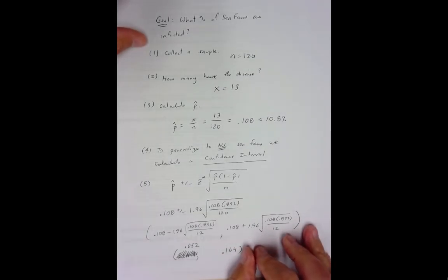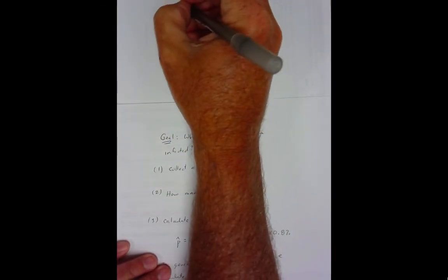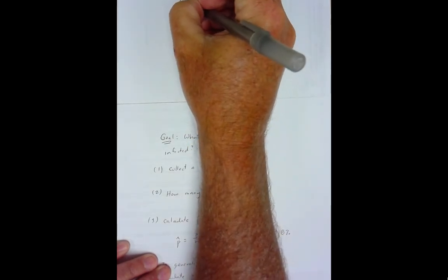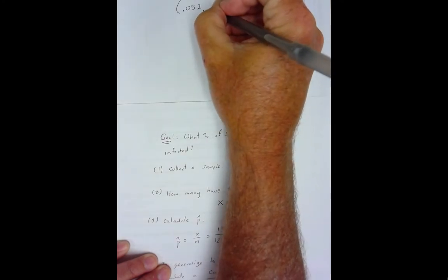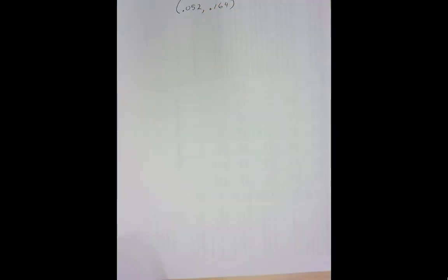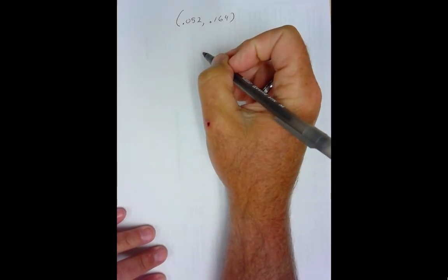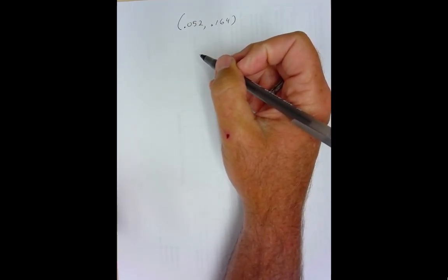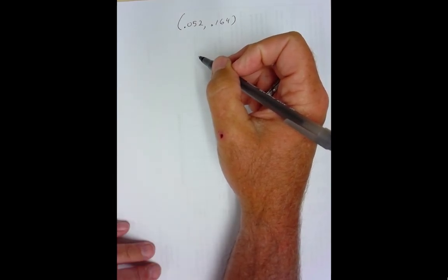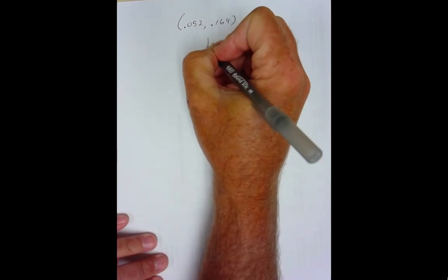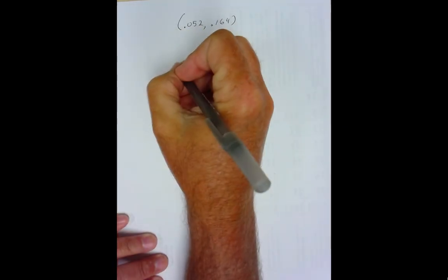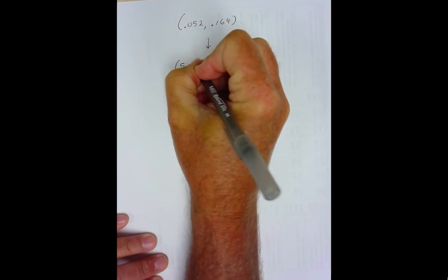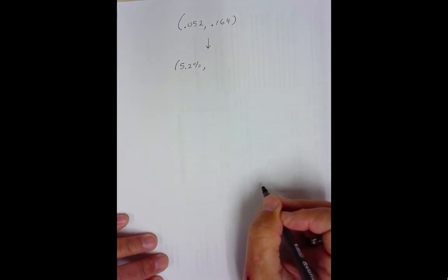So guys putting this in percentages. Again, our answer. Okay, was that typically we don't speak in proportions. You know, if we talk about what proportion of your house is carpeted, you don't say, well, 0.73. That's kind of goofy. You say, well, about 3.4 or 75%. So what I would want to do because we want to know the percentage of sea fans that are infected, I would report this as 5.2% to 16.4%.